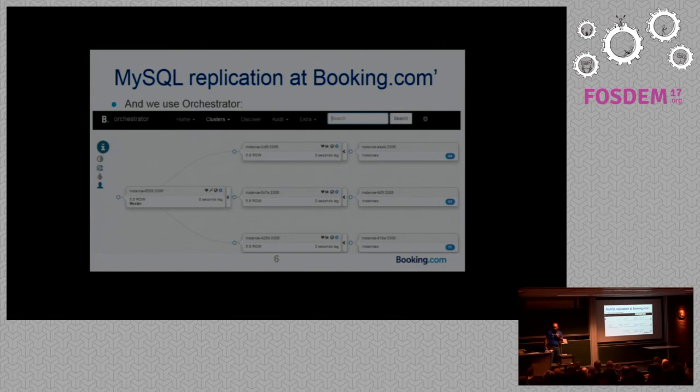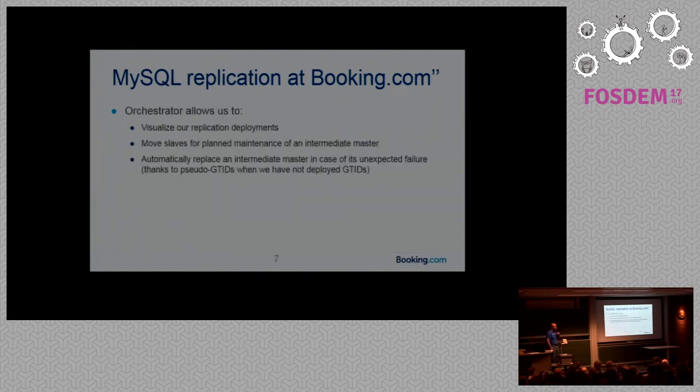Sometimes we have very small deployments, one local slave, two remote servers, and sometimes we have very big deployments. This is an example of a medium deployment using orchestrator. We have our master, three intermediate masters. Two of them are in remote data centers. Dash line here meaning remote data center. And each of those intermediate masters have 40 slaves, so there's about 120 servers in that deployment.